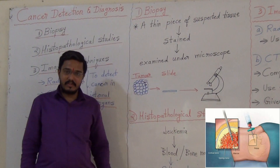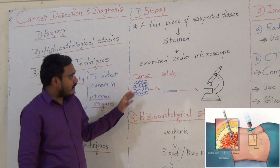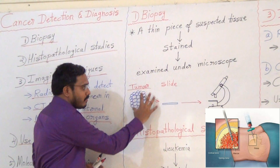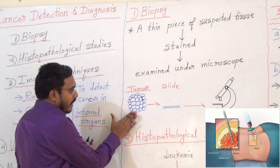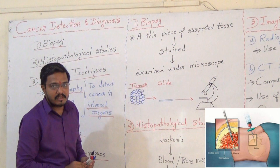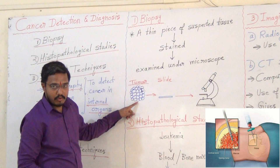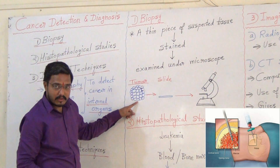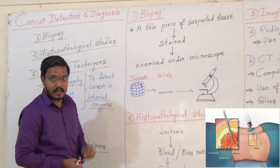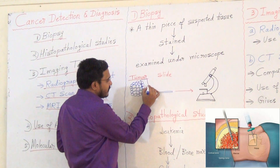First, let us come to biopsy. To understand biopsy in a simplified way — suppose this is a part of the body and there is a suspicion of a tumor. The problem is: how do you know whether it is a tumor or not? They use this technique: a small piece of this suspected tumor is taken.